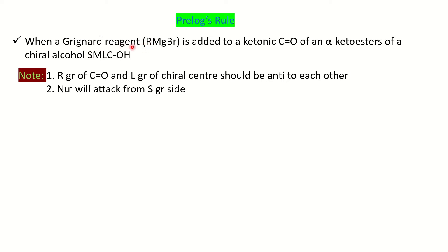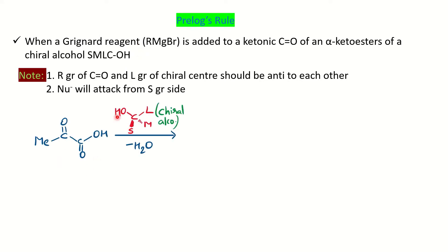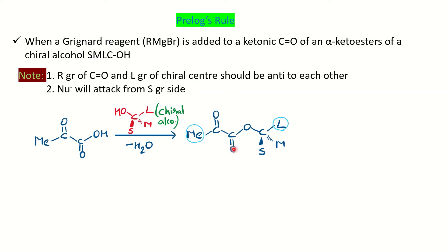Let's take this example. In this example, there is no alpha-keto ester directly; instead, the starting material is given — an acid and an alcohol — which will form alpha-keto ester after condensation. So you have an alpha-keto acid along with a chiral alcohol; after condensation, loss of water occurs and you design the alpha-keto ester.